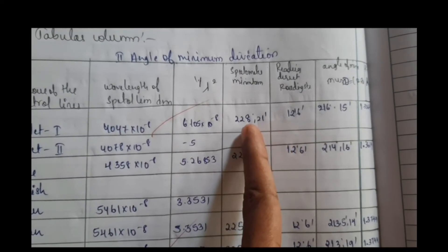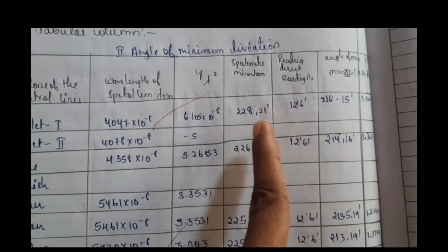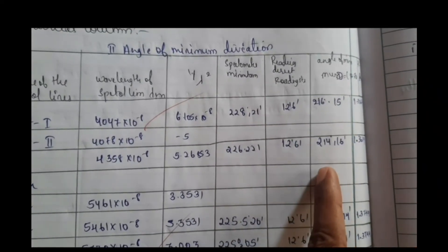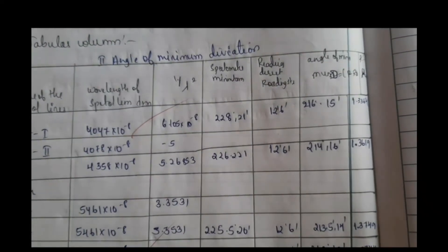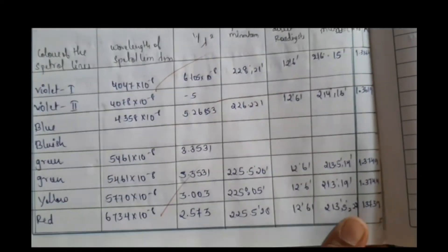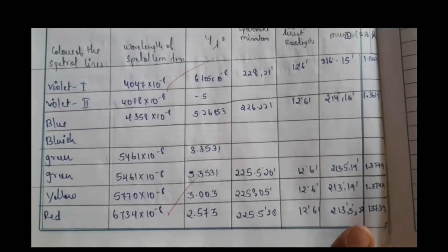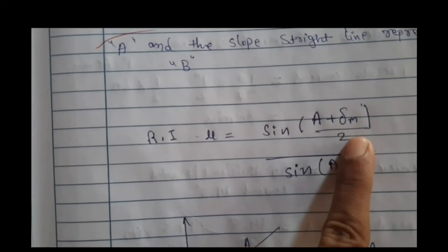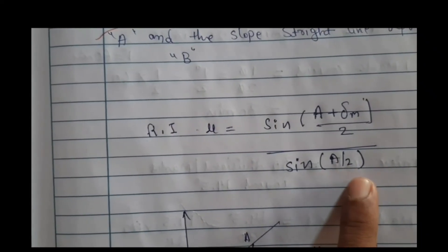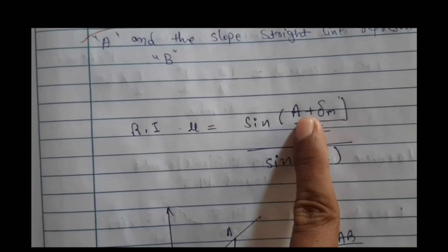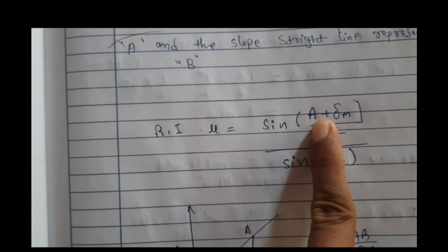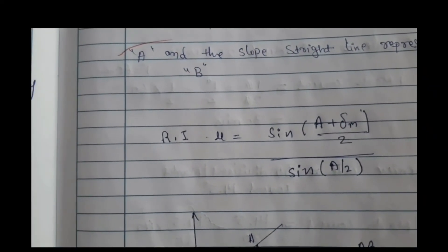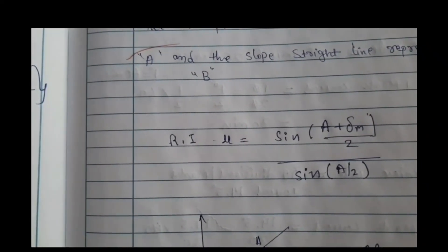Subtract the direct ray reading from the spectrometer reading for each color to get the angle of minimum deviation, denoted as capital D. Then calculate the refractive index for each color using the formula: μ = sin((A + δm)/2) / sin(A/2), where A is the angle of the prism (around 60 degrees) and δm is the minimum deviation for each color as calculated in the tabular column.